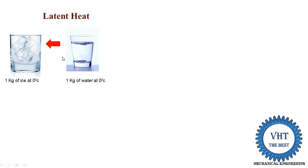Similarly, the opposite process also takes place. Starting with 1 kg of ice at 0 degrees centigrade, we supply certain heat and it converts into 1 kg of water at 0 degrees centigrade. This is also known as latent heat because the temperature remains the same at 0°C, but the state changes from solid to liquid. This is called the latent heat of ice, which is 335 kilojoules per kg.